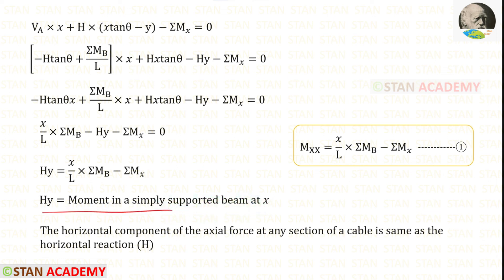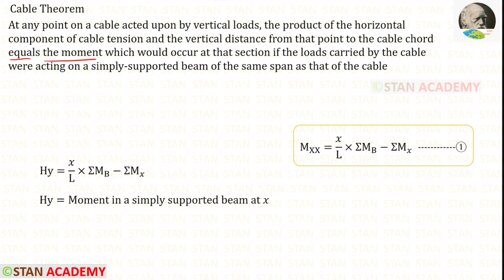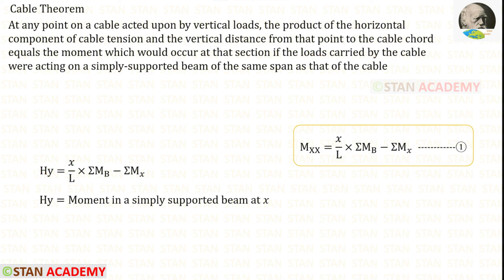From this, we know that the horizontal component of the axial force at any section of a cable is the same as the horizontal reaction H. Let us read the cable theorem one more time. The product of the horizontal component of cable tension and the vertical distance — H is the horizontal component and the vertical distance is Y — so Hy is the product of both of them, and it equals the moment which would occur at the same section if the loads carried by the cable were acting on a simply supported beam. In this way, we can prove the cable theorem.